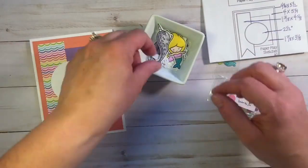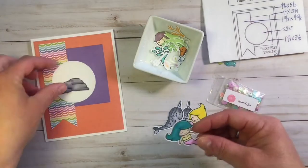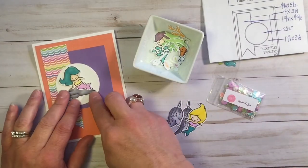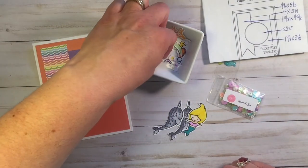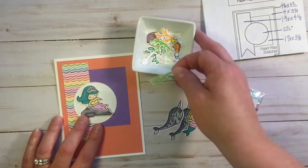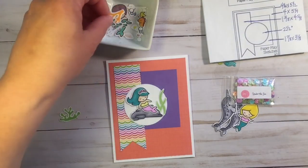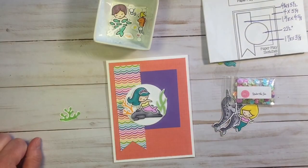And here I'm going through my images that I colored and fussy cut. I don't have the dies for this set, so I just fussy cut them.